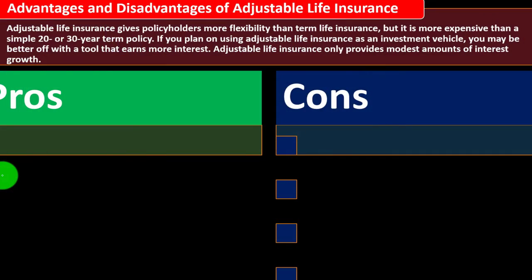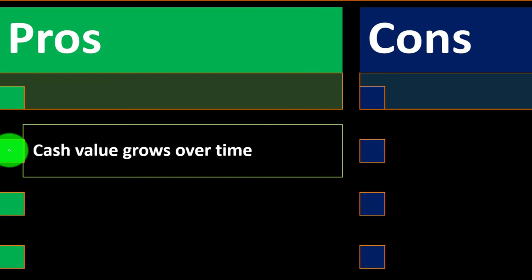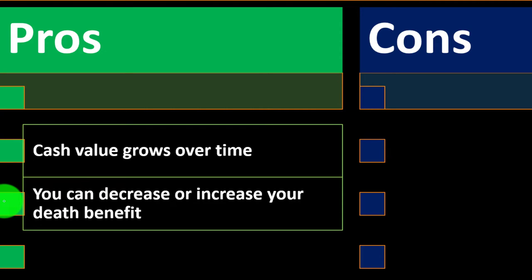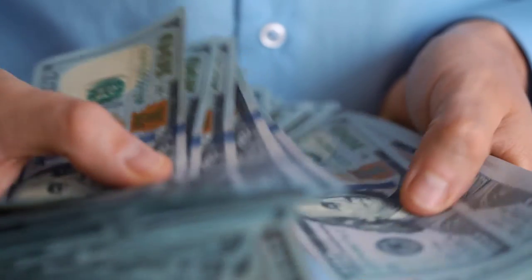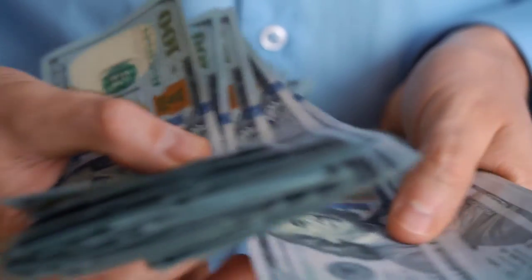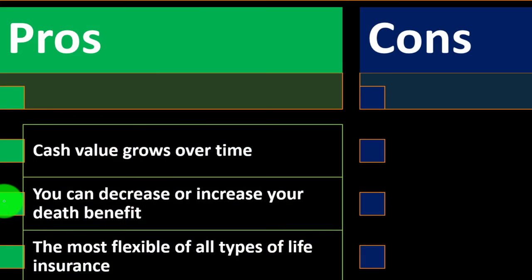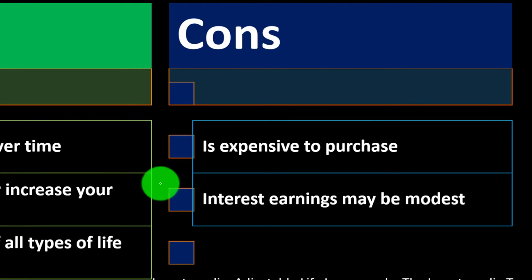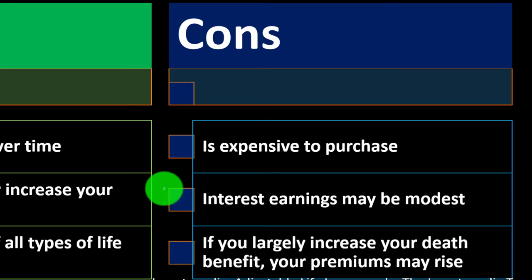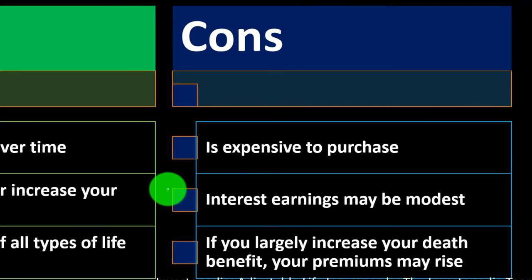The pros of adjustable life insurance include: cash value grows over time, you can decrease or increase your death benefit, and it is the most flexible of all types of life insurance. The cons are that it is expensive to purchase, interest earnings may be modest, and if you largely increase your death benefit, your premiums may rise. Also, buying more coverage on a term basis would mean going through the whole process at an older age, making it more expensive.